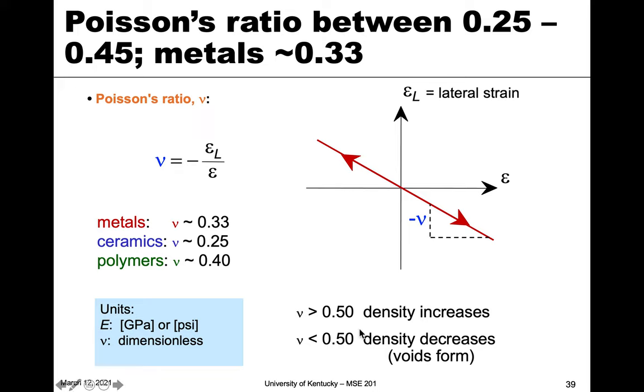However, if this value is greater than 0.5, the density actually increases. So again, it's more common to have values below 0.5, and very uncommon to have a number over 0.5. But this kind of gives you an estimate of what's happening with those values.